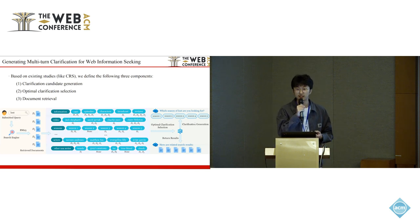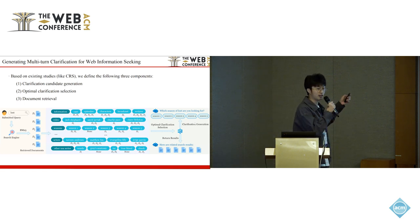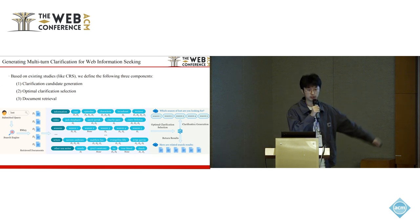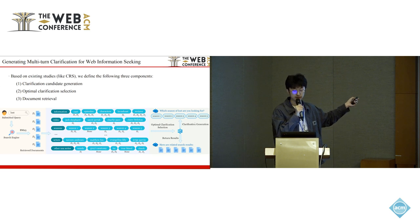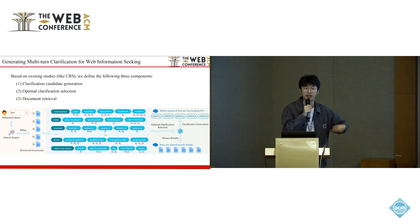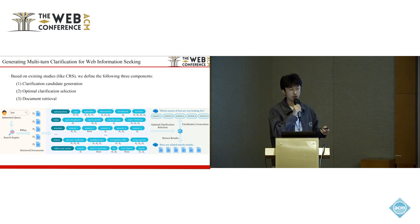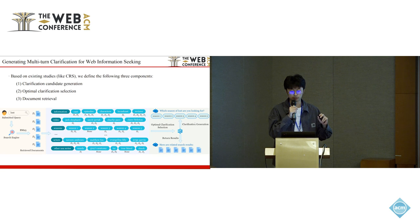Referring to existing studies like conversational recommender systems, we define a framework composed of three components. First is clarification candidate generation — when a user inputs a query, such as the TV series 'Lost', we generate candidate information including cast, episodes, characters, and facets like roles, seasons, and actors. Second, we select the optimal clarification and deliver it to the user, using strategies, rules, or models. Finally, the user selects one facet from the clarification pane, and documents are retrieved and delivered to the user.